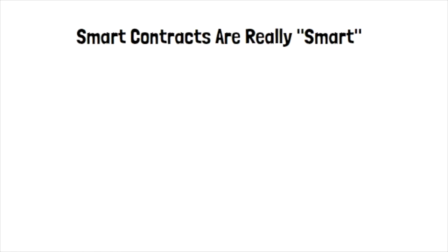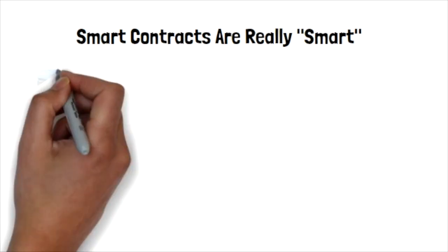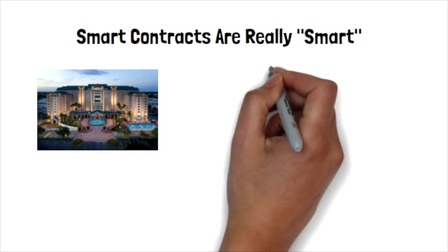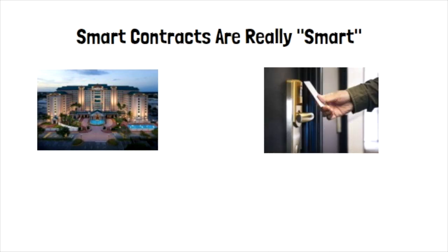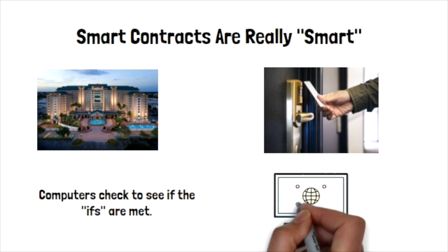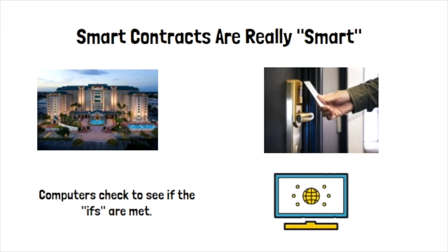Say, for instance, you were planning to stay at a hotel. If you sent your cryptocurrency to the owner, the second he received your payment, the key card to your hotel room would be able to open the door. However, if you did not pay, your key card would not work. The smart contract allows the outcome of the contract to be executed, as long as all the ifs are met. Because computer code makes sure the specifics of the contract are met, there is no need for a central authority.